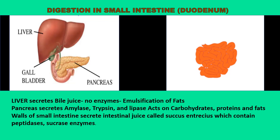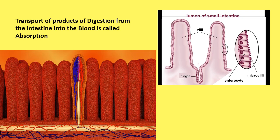The walls of the small intestine secrete a juice called intestinal juice or succus entericus. It secretes peptidases and sucrase. Peptidases act on peptides and convert them into amino acids. Sucrase acts on sucrose and converts it into glucose. After digestion is completed in the small intestine, the food is absorbed into the blood vessels in the walls of the small intestine. Finger-like projections known as villi drastically increase the surface area of the small intestine for greater absorption of digested food. The blood then carries the absorbed food material to different parts of the body.